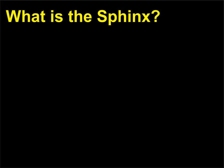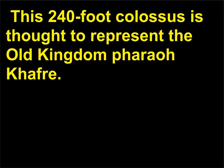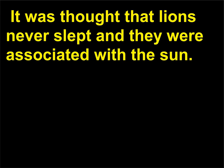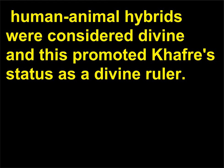What is the Sphinx? The Great Sphinx at Giza, c. 2520–2494 BCE, is a monumental human-headed lion sculpture carved from a natural limestone hill. This 240-foot colossus is thought to represent the Old Kingdom Pharaoh Khafra. Like the Assyrian Lamassu, Egyptians protected gateways with depictions of lions. It was thought that lions never slept and they were associated with the sun. In Egypt, as in much of the ancient world, human-animal hybrids were considered divine, and this promoted Khafra's status as a divine ruler.